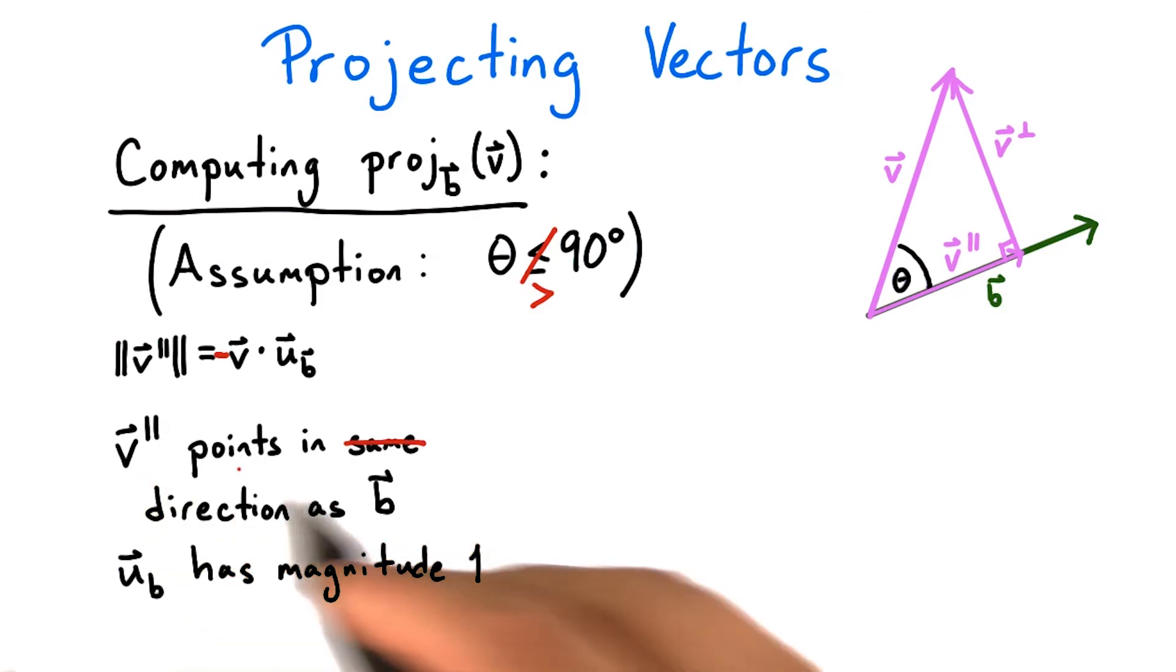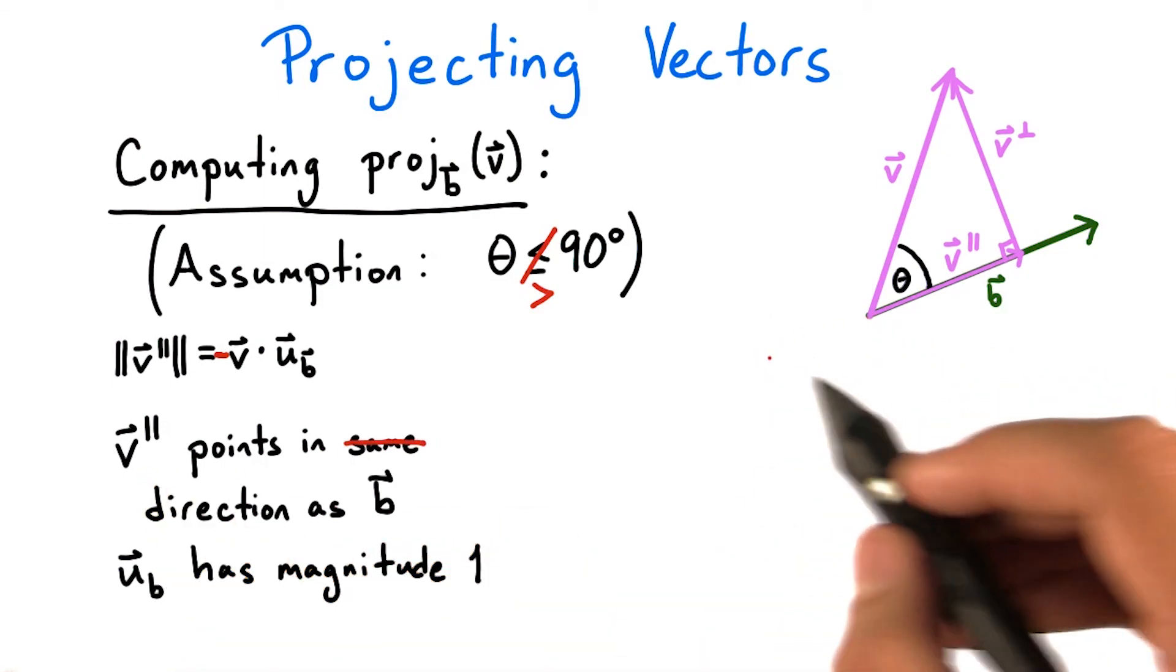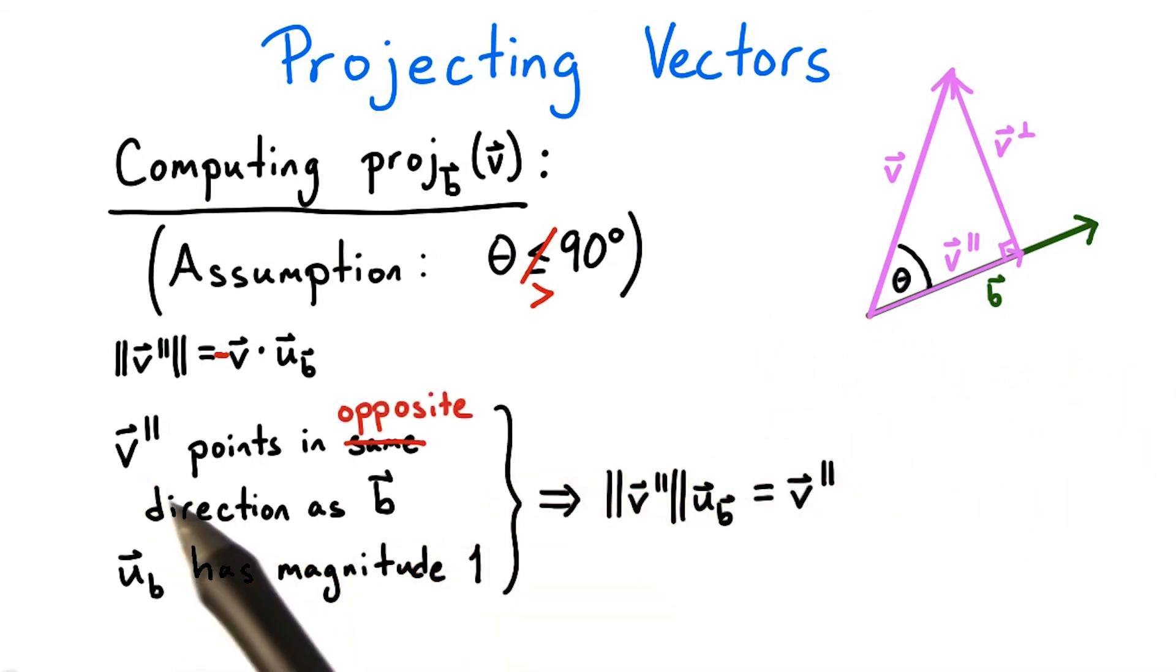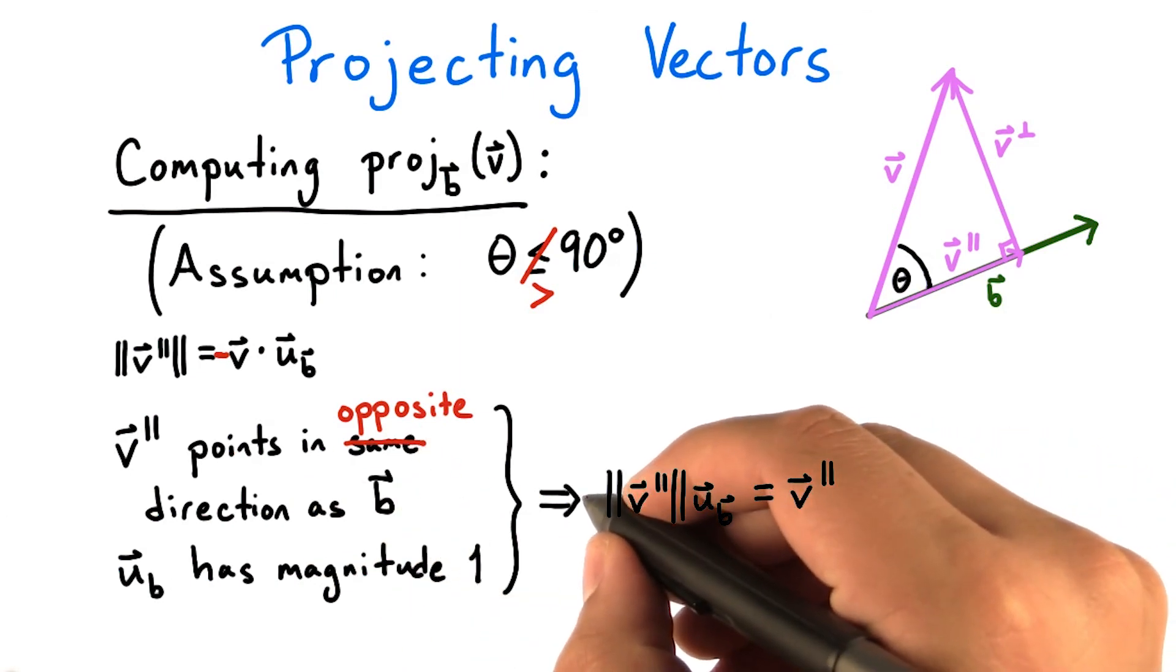Since v parallel is pointing in the opposite direction, this formula will now become a negative. But now when we plug this expression in for length of v parallel, then the negative signs will cancel out and we'll get the same formula.